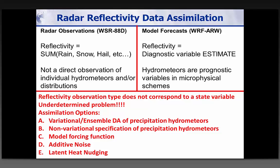There are many approaches to assimilating radar reflectivity observations: variational, ensemble, or hybrid combinations. Relatively early on in the development process, non-variational specification of hydrometeors, model forcing functions, additive noise, and latent heat nudging are all different approaches. I'll focus principally on the model forcing function approach, where we specify latent heating from these observations, though we're certainly moving toward more sophisticated methods.